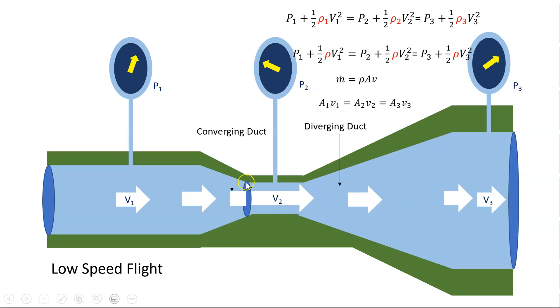So if the area here at area 2 is smaller than area 1, then the velocity must be bigger than the velocity in area 1. And similarly, for this section out here, if the area is larger than area 2, then the velocity must be smaller.